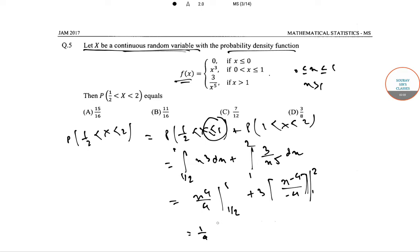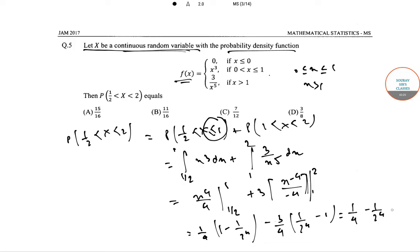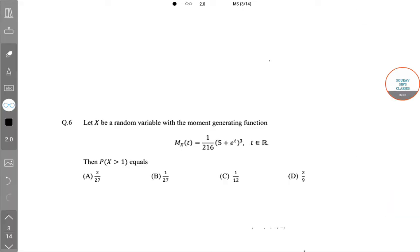On solving this: 1/4 minus 1/(2 to the power 4), plus 3/4 minus 1/4, minus 1/(2 to the power 4), plus 3/4 minus 1/2. This comes out to be 15/16, so the correct option is option A.